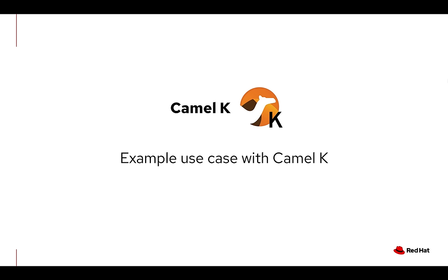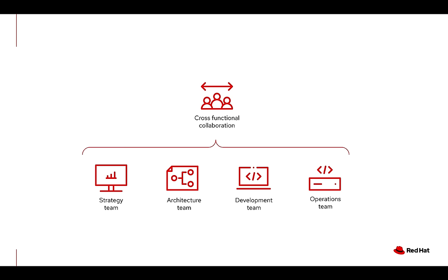Hello and welcome to this CamelK demo. We want to show today an example use case implemented with this technology. In this scenario, we'd like to see an automated way of having some cross-functional collaboration between various teams. In this particular case, a strategy team has some questions and concerns that they need to have answered, and all the teams in the company can help them so that they can make decisions for the future of the company.